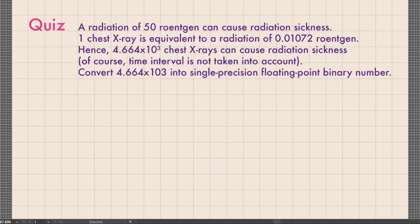As a quiz: a radiation of 50 roentgens can cause radiation sickness. One chest x-ray is equivalent to 0.01072 roentgens, so 4.664 times 10 raised to 3 chest x-rays can cause radiation sickness (time interval not taken into account). If you are one of my students, please convert 4.664 times 10 raised to 3 into a single precision floating point binary number and submit your answer through our learning management system.